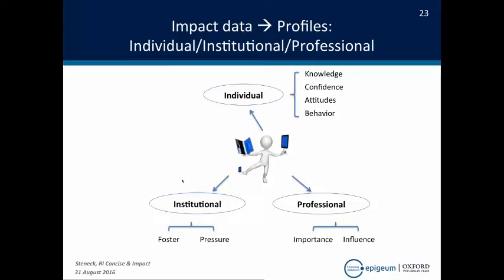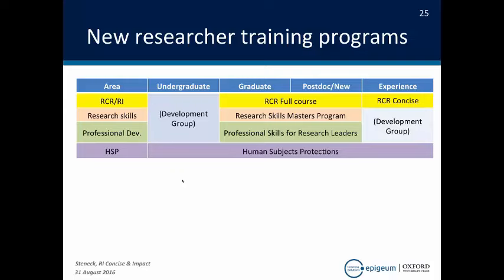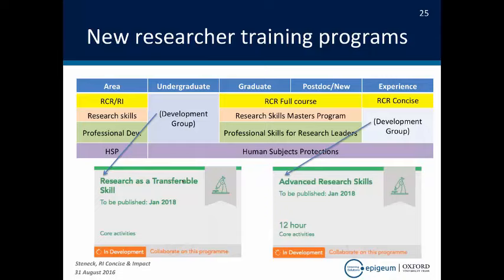Our future plans moving forward: I want to talk about development groups, compliance packages, and then the issue of hosted versus LMS. Currently we have our courses in process, and we have two new programs: research as a transferable skill and advanced research skills. These will fill in gaps at the undergraduate level and at the experienced researcher level. I just want to make you aware that we're moving into that area so that we have more level-specific learning in the courses we offer for research.